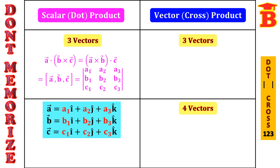The dot product of 3 vectors is the determinant formula. Just take and write all 3 vectors' coefficients: A1, A2, A3 in the first row; B1, B2, B3 in the second row; C1, C2, C3 in the third row. Remember: DOT means DETerminant — so for dot product of 3 vectors, we have to take the determinant.